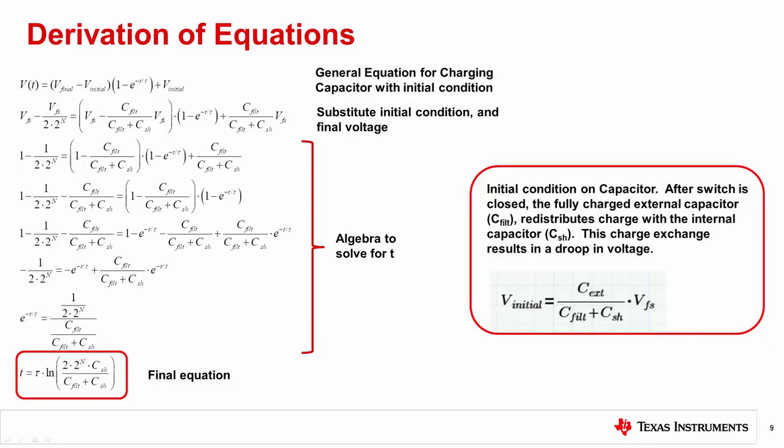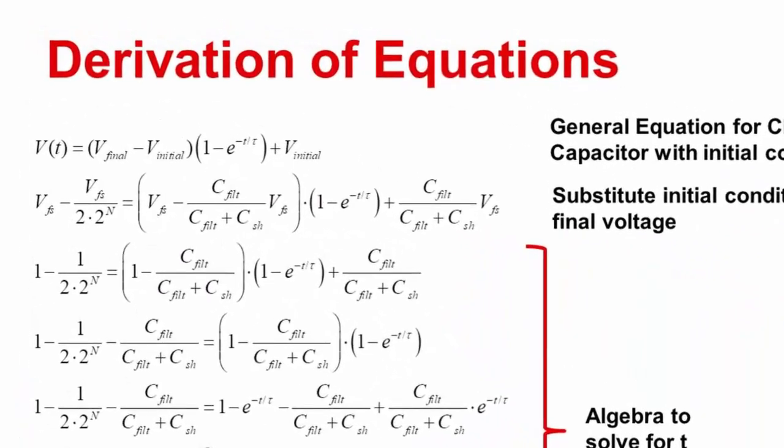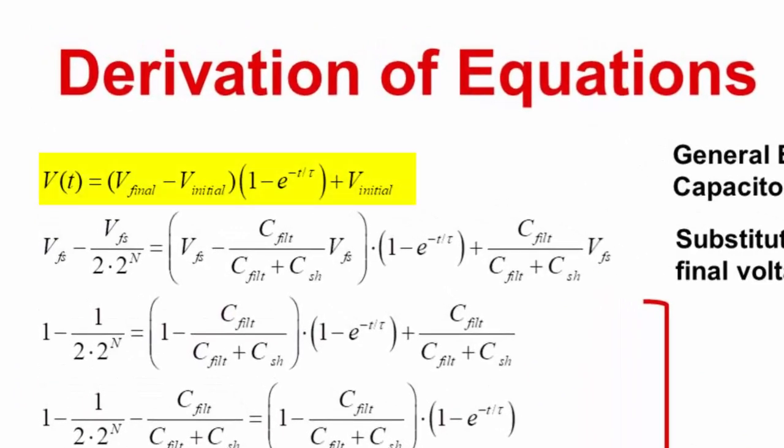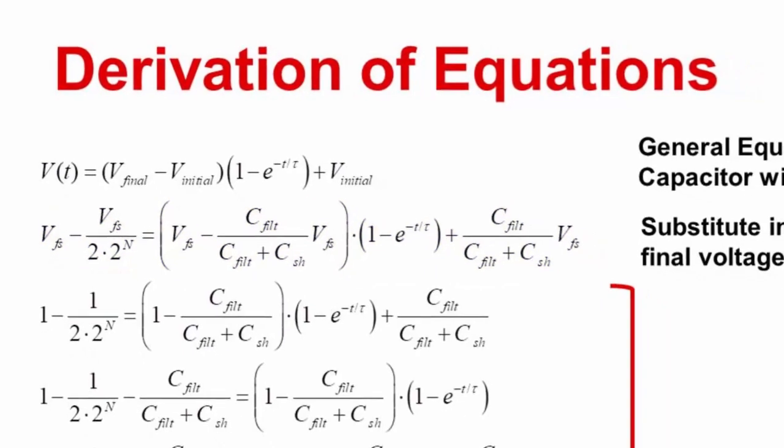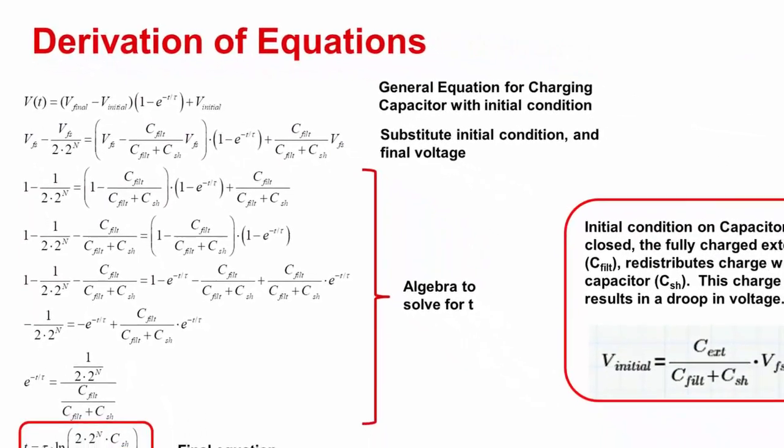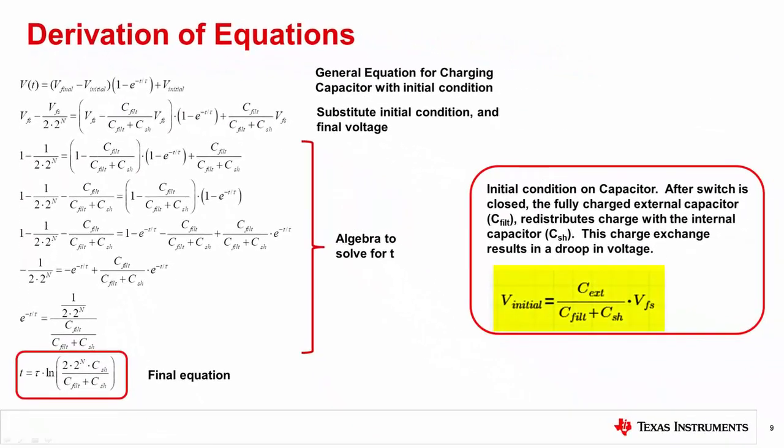The last slide shows the derivation of the equation used in this presentation. The first equation is the generic equation for an RC charge curve with an initial condition. The second equation substitutes in the initial condition. The initial condition can be derived by considering the voltage droop introduced when a fully discharged sample and hold capacitor is put in parallel with the fully charged external filter capacitor. The final voltage in the second equation assumes half an LSB of droop from full scale. After substituting the initial condition, some algebra is used to solve for time.